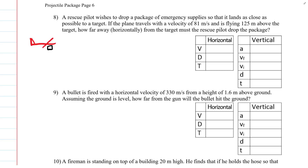Welcome physics fans, we're going to continue with the physics 11 projectile package on page six, number eight. A rescue pilot wishes to drop a package of emergency supplies so that it lands as close as possible to the target. If the plane is traveling with a velocity of 81 meters per second and is flying 125 meters above the target, how far away horizontally from the target must the rescue pilot drop the package?